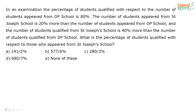Alright, next question. In an examination, the percentage of students qualified with respect to the number of students appeared from DP school is 80%. The number of students appeared at St. John's school is 20% more than the number of students who appeared from DP school, and the number of students who qualified from St. John's is 40% more than the number of students qualified from DP. What percentage of the students qualified with respect to those who appeared from St. John's school?